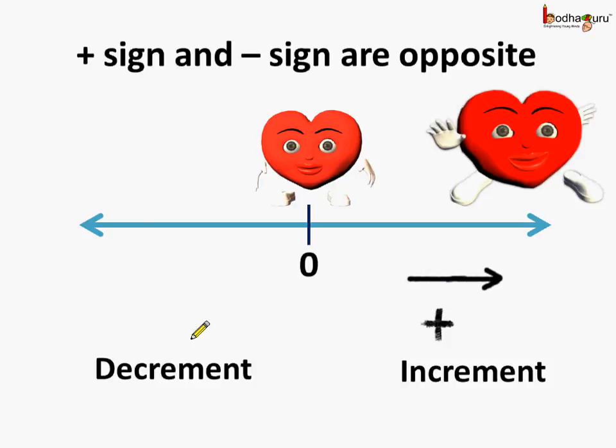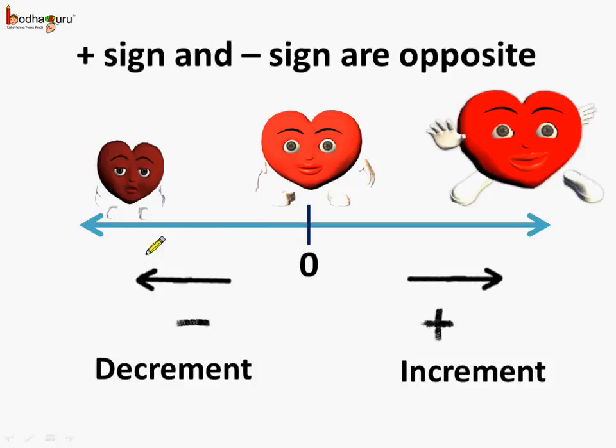On the other hand, as the negativity grew, there was decrement in overall happiness, and this led to weakening of his heart and the heart became dull. So this way we are showing how negativity is increasing on the opposite side. Here we have increase in positivity and here we have increase in negativity.